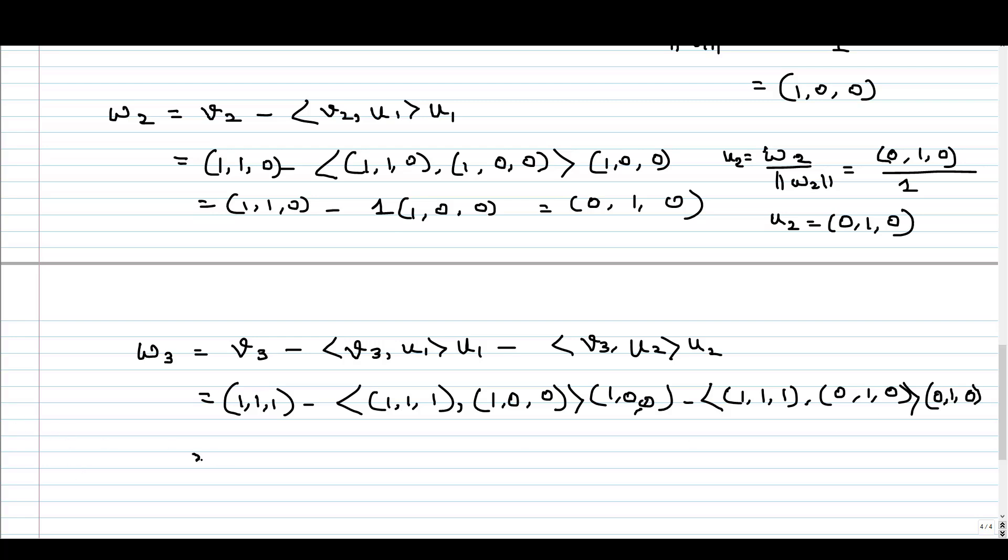So if we calculate this, we will get (1, 1, 1). The first inner product, if we calculate the dot product of it, we will get 1. So this is 1 into (1, 0, 0). The second inner product is also 1. This is 1 into (0, 1, 0). If we subtract this from (1, 1, 1), the first two coordinates will be 0 and the third one is 1.